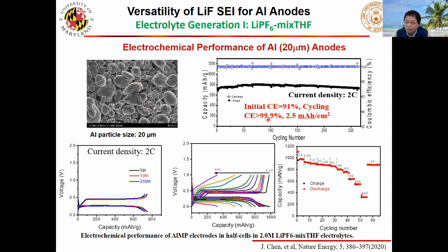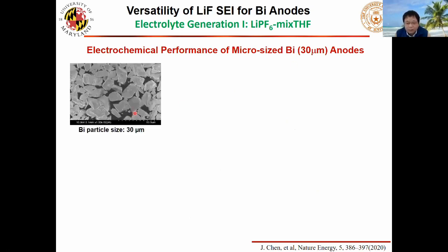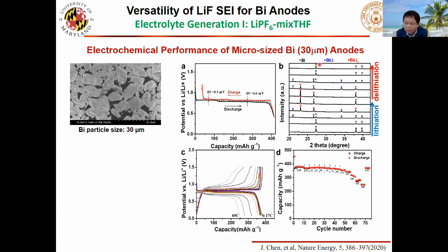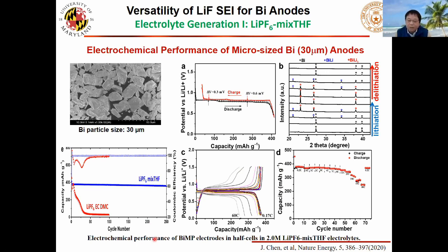Also bismuth — particle size even larger than aluminum — demonstrates the same principle. This validates the universal principle. We hold this principle for high capacity anodes. Recently, we applied this knowledge to NMC811, which has reported cracking that nobody can solve. We believe this can also be applied. We ask the student to focus on using the same principle to solve the cracking problem for any electrode. In the future, energy density really depends on voltage and capacity. If we increase the capacity, the volume change is big and it will crack — you have to solve this problem, otherwise you cannot develop the next generation battery.